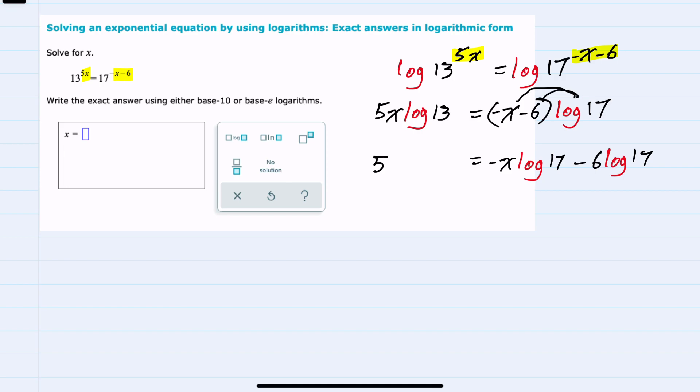Bringing down the left-hand side, we now see that we have 3 terms, and only 2 of those terms have x's. So we would want to get those on the same side, and to do so, I can add the x log 17 term to both sides, canceling it on the right-hand side.